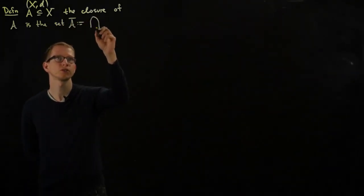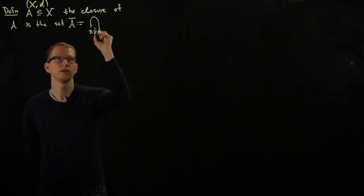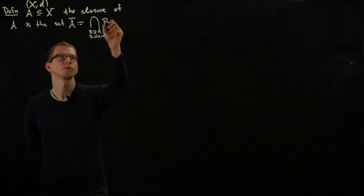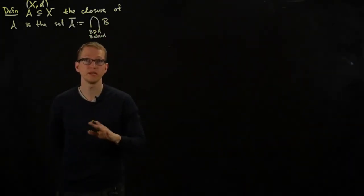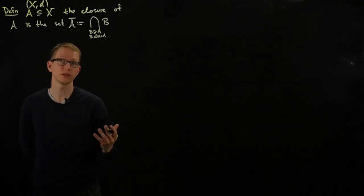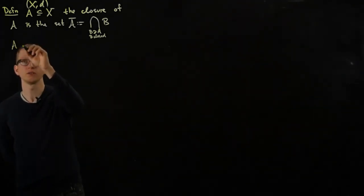So it's the intersection of B, which is a subset of x, and it contains A, and B is closed. There are many other equivalent definitions of the closure of A, and also for what it means for a subset to be closed. And in fact, one of them is a little bit important, so we should say this.